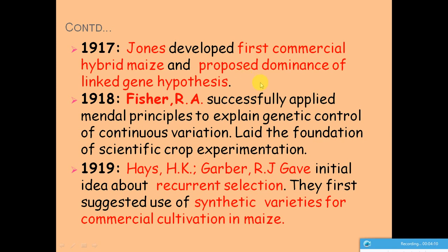In 1918, R.S. Fisher successfully applied Mendelian principles to explain the genetic control of continuous variation, and used these principles to analyze crop breeding experiments, laying the groundwork for quantitative genetics.